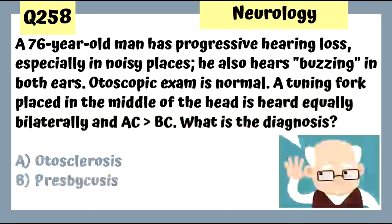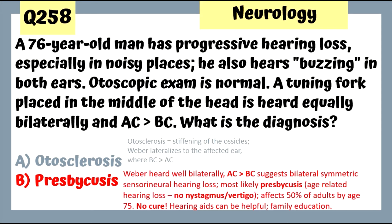Question 258: A 76-year-old man has progressive hearing loss especially in noisy places, buzzing in both ears, a normal otoscopic exam, tuning fork heard equally bilaterally, and air conduction greater than bone conduction. This is presbycusis, where air conduction is greater than bone conduction, which is normal. Compare to otosclerosis, where stiffening of the ossicles causes bone conduction greater than air conduction.